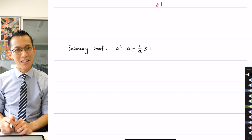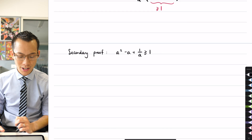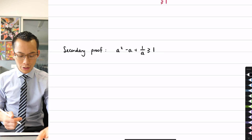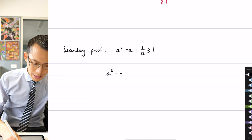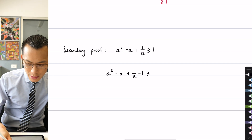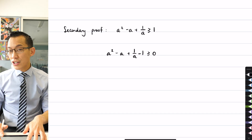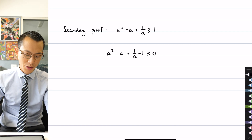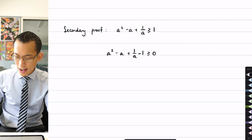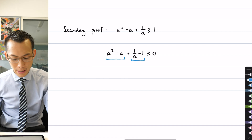One classic way to deal with an inequality is to get everything onto one side and then prove that it's positive or negative. That's really helpful here because when you look at what you get — a squared minus a plus one over a minus one — the question is: can I prove that this is greater than or equal to zero? Even though it doesn't look like it, this can actually be quite nicely factorized into two neat pairs.